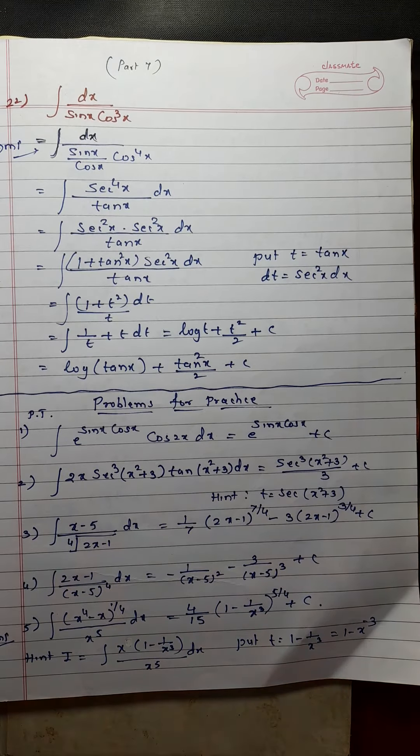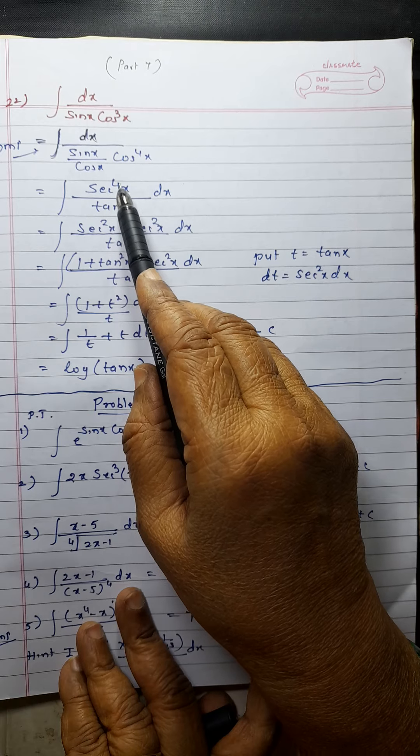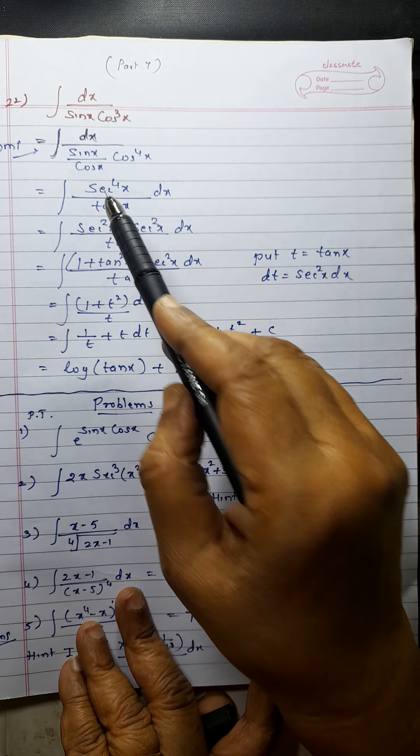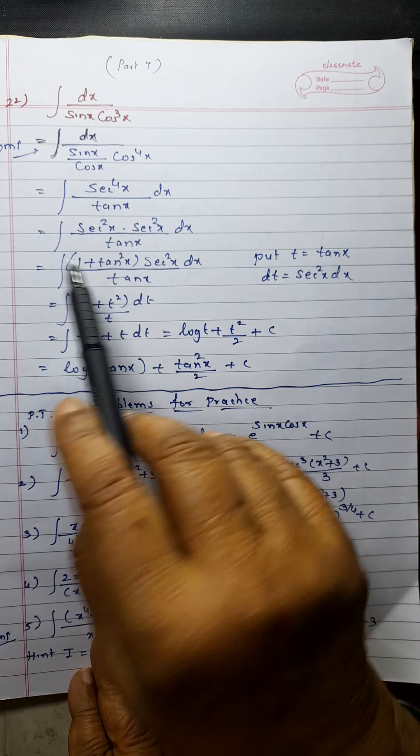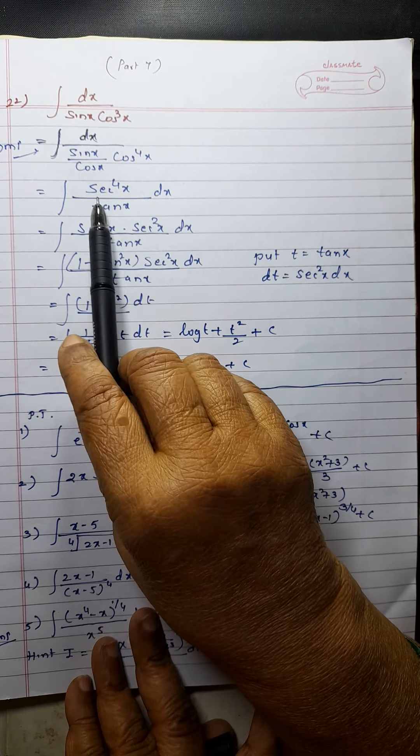So this cos raised to 4x, when taken to the numerator, it will become sec raised to 4x, and this is tan x. I will split sec raised to 4x as sec square x into sec square x. One sec square I will keep as it is because I will require that with dx, and the other sec square I will write as 1 plus tan square x.